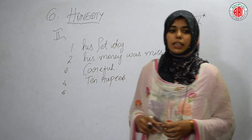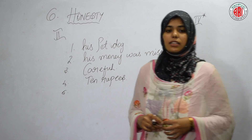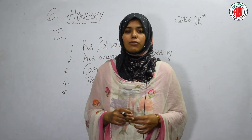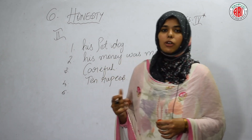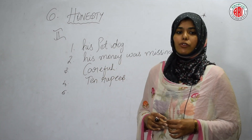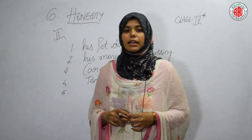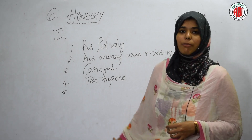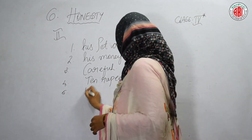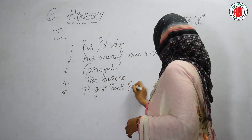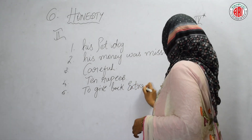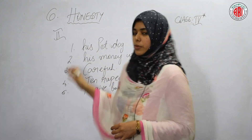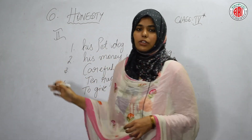The fifth question: at the end, Chinna ran to the fruit seller — to ask for more fruits, to buy more fruits, to give money, or to give back extra money. The right answer is to give back extra money. Students, these are the right options; tick them down in your readers.